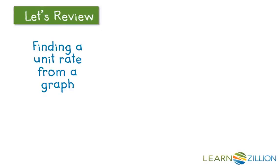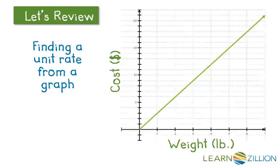You've already learned how to find a unit rate from a graph in some cases. For example, for this graph of a proportional relationship you could find one on the x-axis and see directly that one pound costs three dollars. So the unit rate here is three dollars per pound.